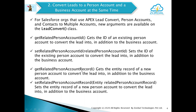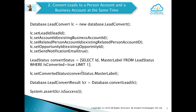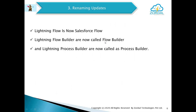In this example we can see that if we have a lead, we can provide the lead ID, and then along with the business account we can give the Person Account ID. Then we can convert that lead into an existing Business Account and Person Account instead of a contact.